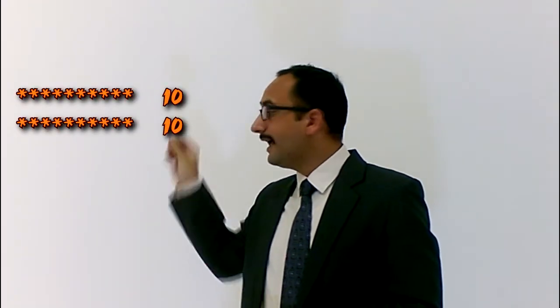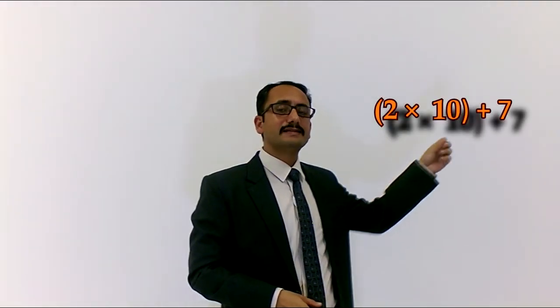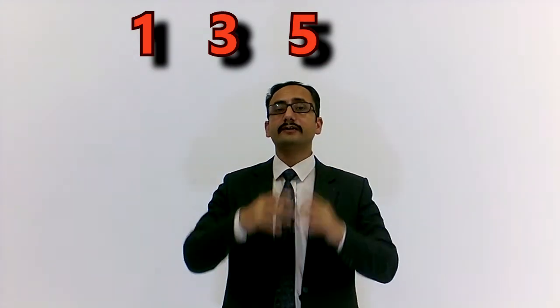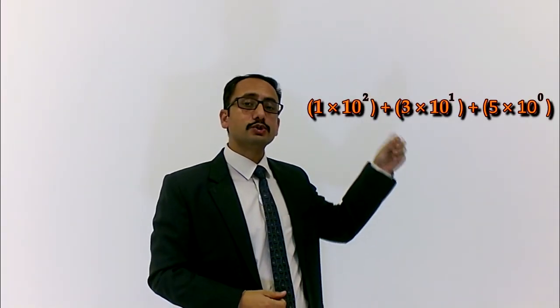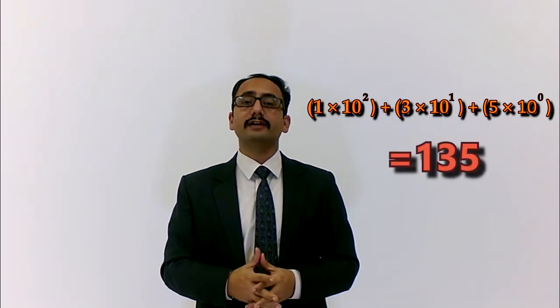Let us consider I have 27 different objects. Writing and counting 27 objects is a tedious job, especially if the number becomes very large. So in this numeral system, how do we write 27? 27 is written as two groups of 10 each — meaning 2 times 10 and 7 — so 27 can be expressed as 2 times 10 plus 7. Similarly, if I have the number 135, I will make a 10-by-10 group of 100 objects, then 3 rows of 10 each, and 5 in the end. So 135 can be expressed as 1 times 10 raised to the power 2, plus 3 times 10, plus 5 times 10 raised to the power 0.